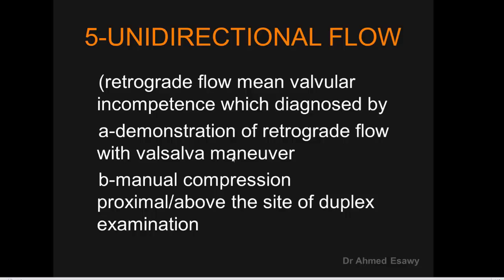The fifth character of venous flow is unidirectional flow. Retrograde flow means valvular incompetence, diagnosed by demonstration of retrograde flow with the Valsalva maneuver or manual compression proximal to or above the site of duplex examination. Flow in the vein is continuous toward the heart; retrograde flow indicates valve incompetence, demonstrated by Valsalva or augmentation. For augmentation testing for incompetence, compression is applied proximal to — not distal — the site of examination.